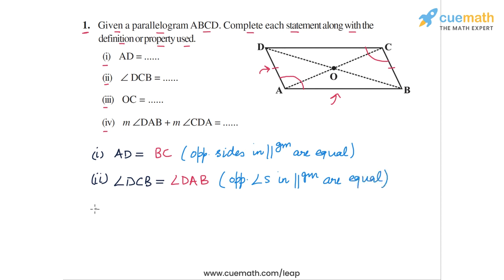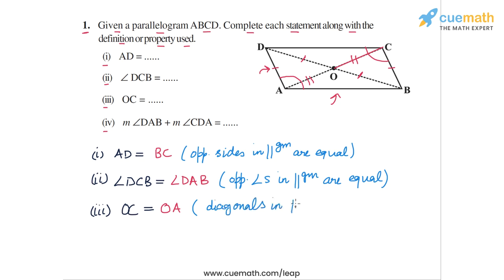Statement three says OC is equal to what? OC is this segment of the diagonal — half of AC, this part of the diagonal AC. We know that in a parallelogram, the diagonals bisect each other. So OC will be equal to OA, and OD will be equal to OB. We only need the fact that OC is equal to OA, because the diagonals in a parallelogram bisect each other. The reason is: the diagonals in a parallelogram bisect each other.